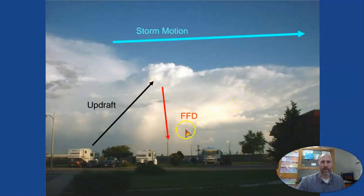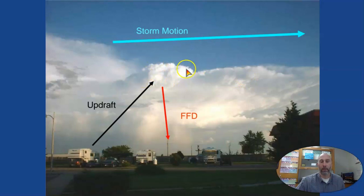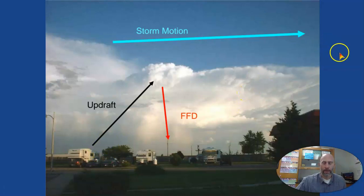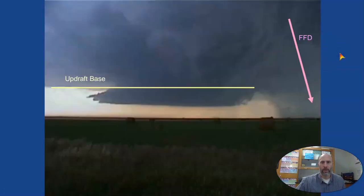You've got the updraft and you can see the rain — the forward flanking downdraft in front. The storm's moving this way. Here's that overshooting top: if you have an anvil with a little bump on top, that means really strong updrafts are causing that top to pop up. We'd anticipate the tornado to be at the back portion of the storm.